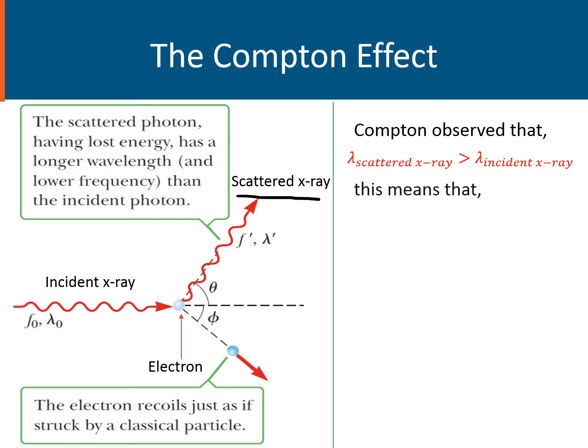Since the wavelength is inversely proportional to the frequency, then as the wavelength increases, the frequency is going to decrease. Therefore, the frequency of the scattered x-ray is much lesser compared to the frequency of the incident x-ray.